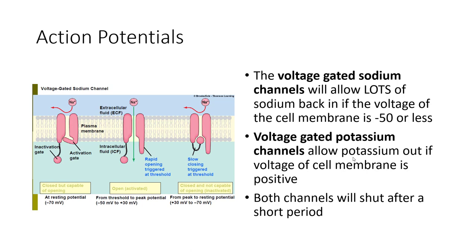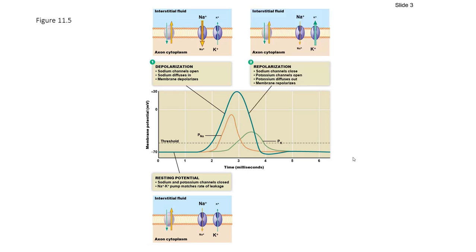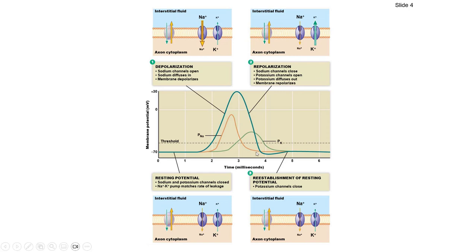Both of these channels open and automatically shut after a short period. At resting potential, when that threshold is reached, you see the depolarization — sodium channels open and sodium rushes in, causing a positive charge across the membrane. Then there is repolarization as the potassium comes out. You see the sodium going in and potassium going out after the membrane becomes positive, resulting in a negative charge again — an overshoot and re-establishment of the resting potential as the sodium-potassium pump puts sodium back out and potassium back in.